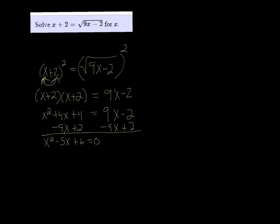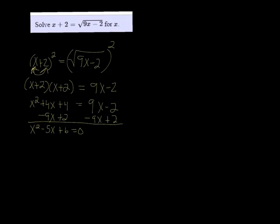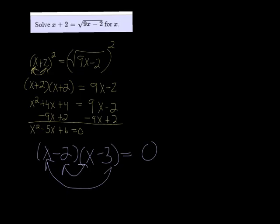We should be able to factor this to x minus 2 and x minus 3. It appears to be the right factors, because negative 2 times negative 3 is 6. And if you multiply the inside and the outside terms, you get negative 5x. So that would give us the solutions of x equals 2 and x equals 3 if we set each one to 0 and solve.